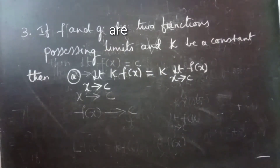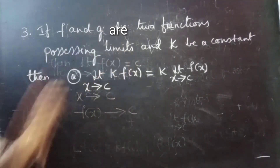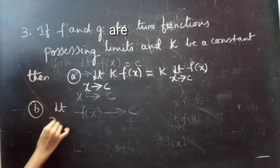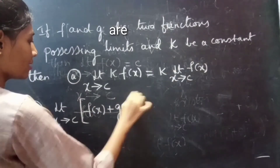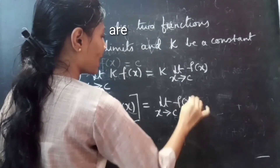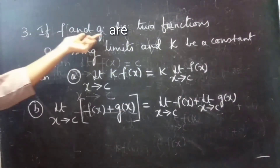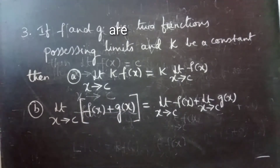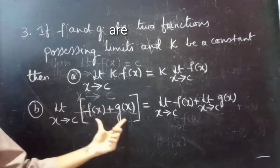Since f and g are two functions possessing limits, next result b: limit x tends to c of f of x plus g of x is equals to limit x tends to c, f of x, plus limit x tends to c, g of x. That is, the limit of a sum equals the sum of the limits.